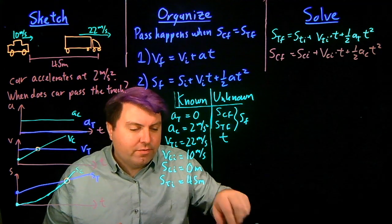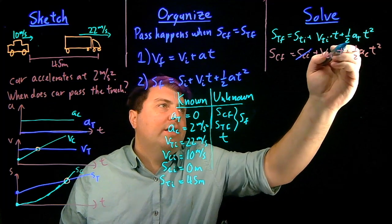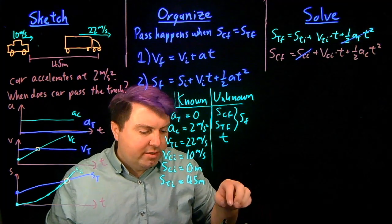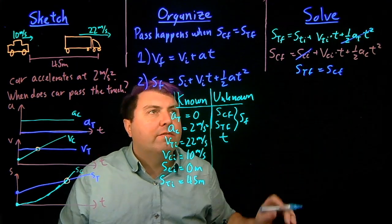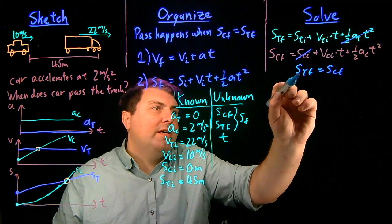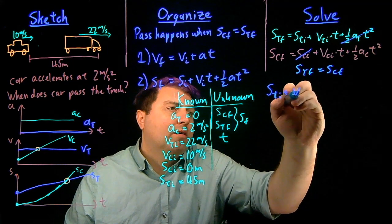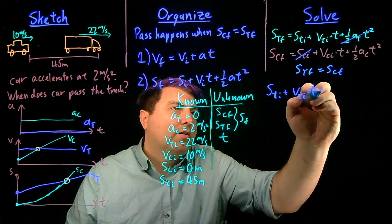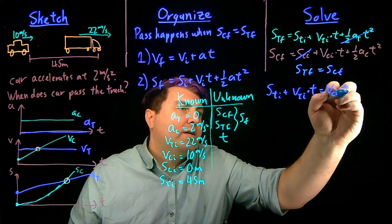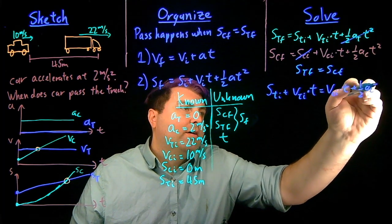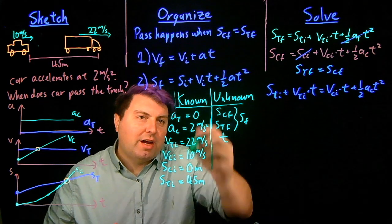Well, I know a lot of things from my knowns and unknowns. I know that SCI is zero. I know that AT is zero. So that makes things a lot easier. But most importantly, I know that STF equals SCF. So every time I see STF, I can write in STI plus VTI times T. And every time I see SCF, I can write in VCI times T plus one-half AC T squared.